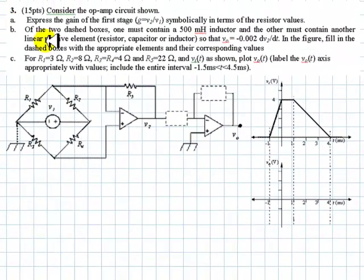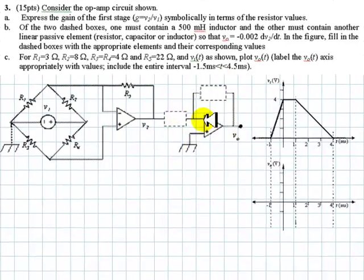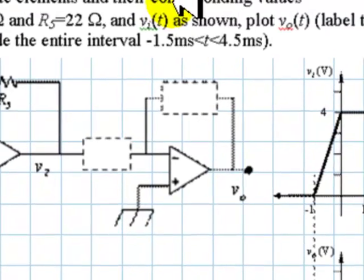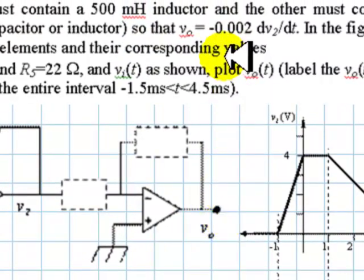For this part B we concentrate on this second stage of the circuit. It says of the two dashed boxes, one must contain a 500 mH inductor and the other must contain another linear passive element, either a resistor, capacitor or inductor. So that the output is negative 0.002 times the derivative of the input V2 with respect to time. So this circuit here is a differentiator.